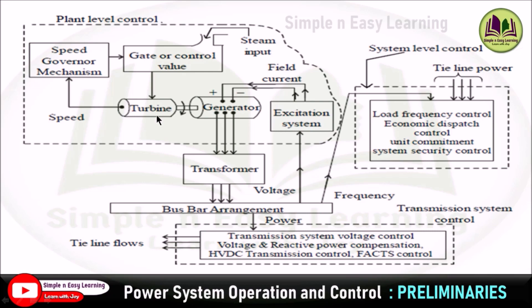The speed governor control deals with speed regulation. The turbine speed is sensed by a sensor and this speed is compared with the reference speed; the differential speed is sensed by the speed governor. The main operation of the speed governor is to control the speed corresponding to the differential speed by closing and opening the control valve. If the differential speed is low, the control valve is opened so that steam can flow at higher speed, thereby increasing the speed of the turbine.